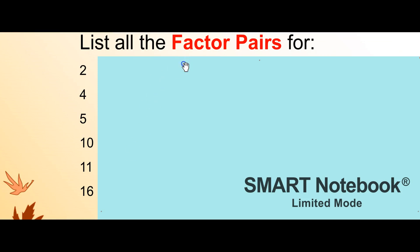Okay, what did you get? For 2, we have the factor pair 1 and 2. For 4, 1 and 4, and 2 and 2. For 5, we have 1 and 5.